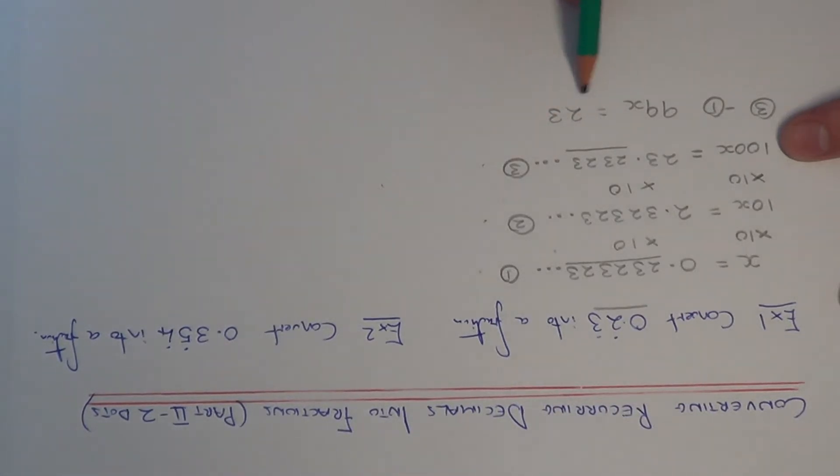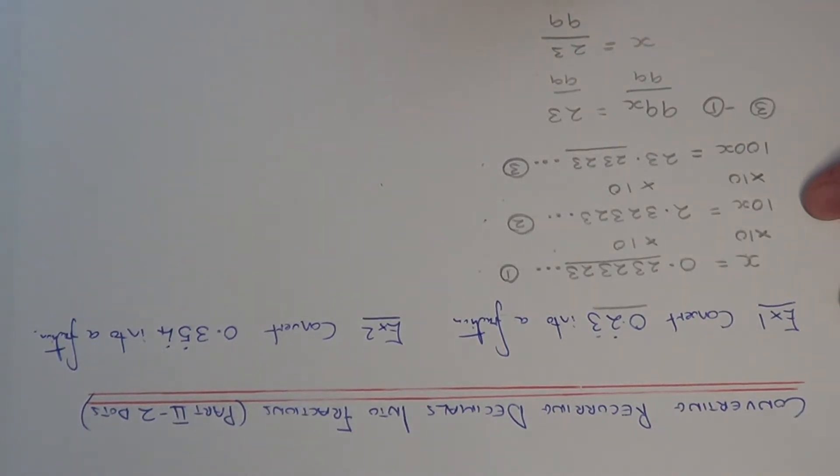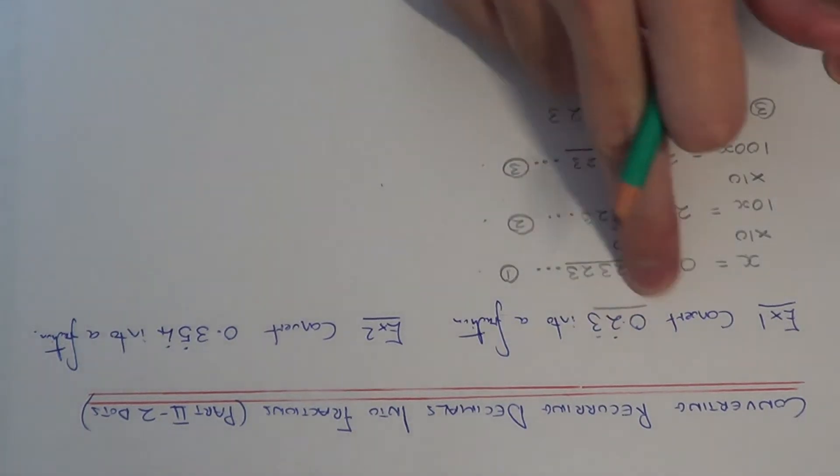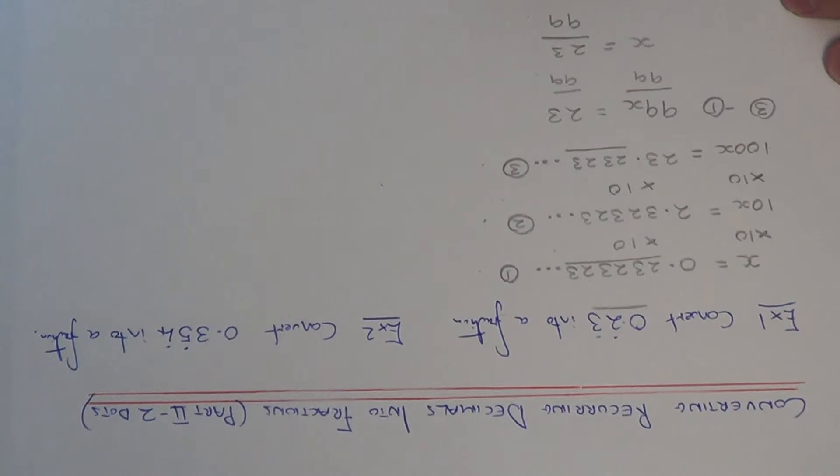So I end up with the equation 99x equals 23. All I need to do now is solve this equation. x is being multiplied by 99. So if I divide both sides by 99, I get the answer of x is equal to 23/99. And this is my final answer. So I have rewritten the recurring decimal as a fraction.